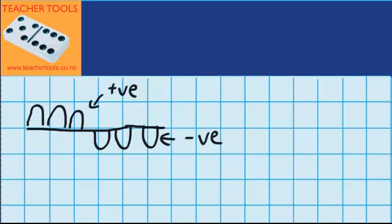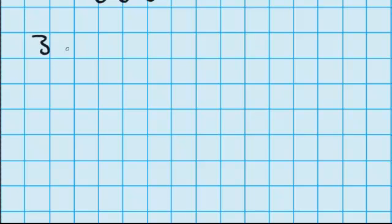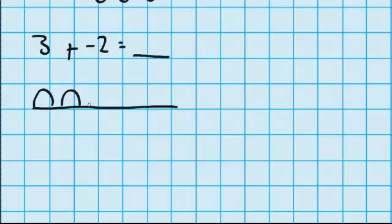Let's start with a question similar to the ones we did in our last lesson: three plus negative two, and we want to find out what that equals. Let's draw a picture to show what that looks like. I've got three hills — one, two, three — and you can see here I've got two dales, or two holes.